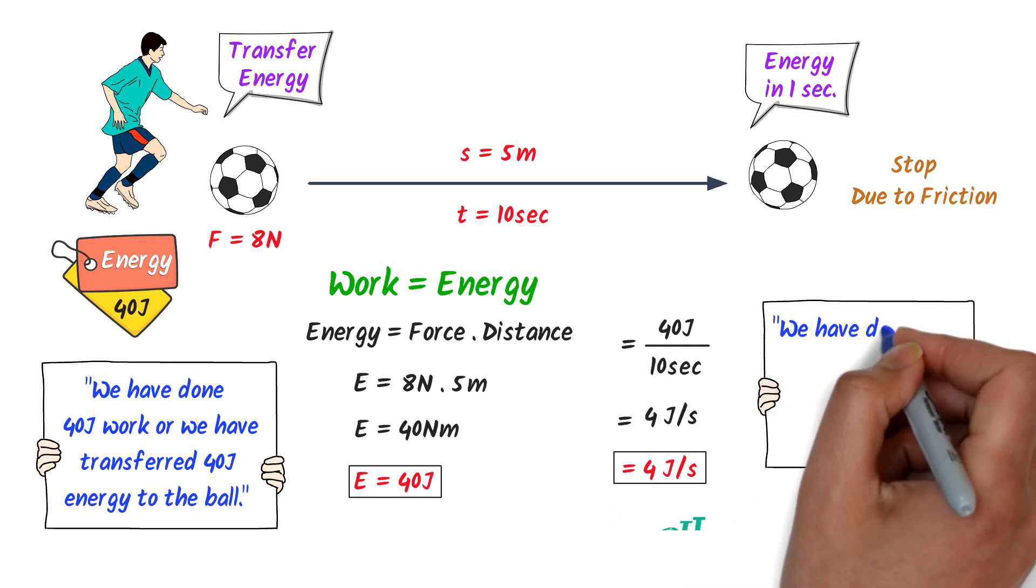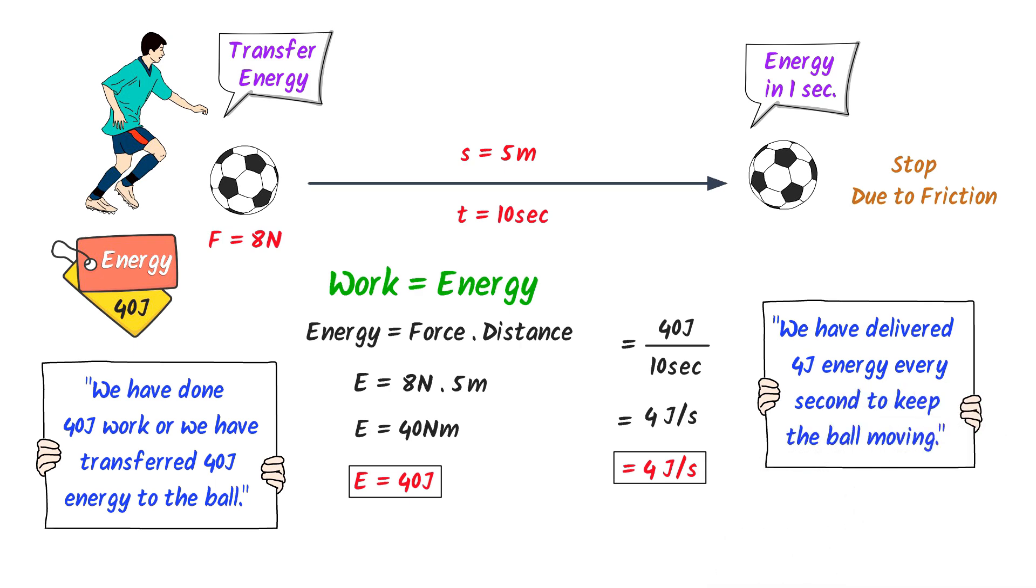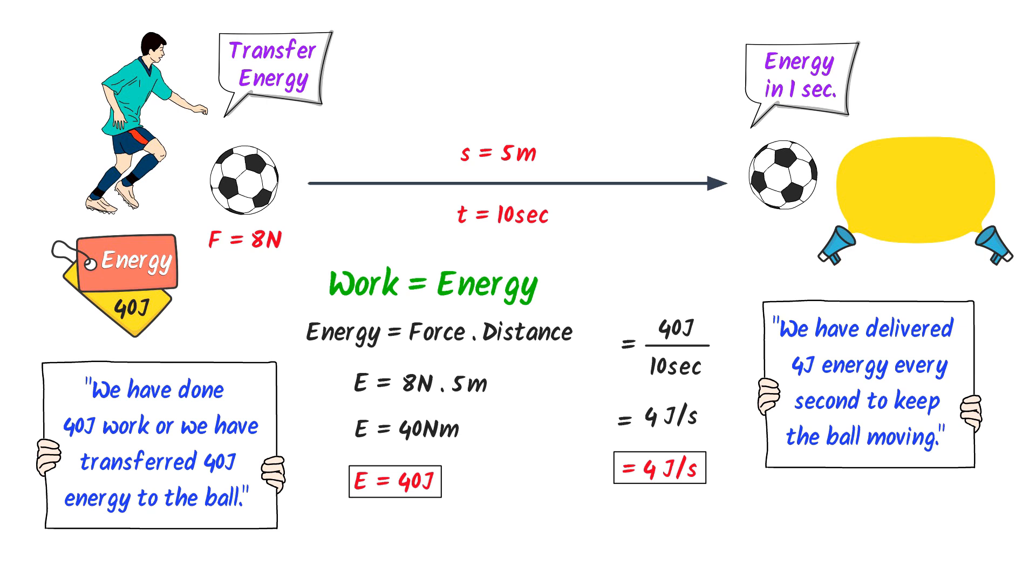Thus, we say that we have delivered or transferred 4 Joule energy every second to keep the ball moving. Also, we can say that ball needs 4 Joule energy every second to move. The time 4 Joule energy becomes 0, the ball will stop.